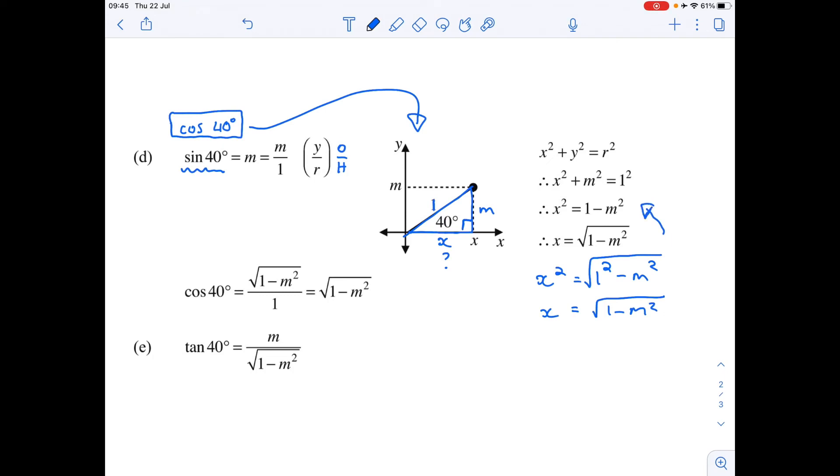I'm just doing it shorter instead of writing the whole Pythagoras out. So now the cos of 40 over here, which is what the question was, is going to be adjacent over hypotenuse, or x over r. So my x is the one I've just worked out. My x is going to be the square root of 1 minus m squared. So it's going to be 1 minus m squared over 1, which is just that.